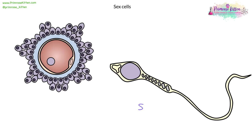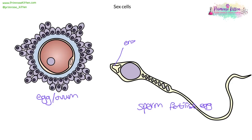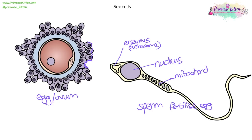The sex cells — the sperm and the egg, or ovum — have particular adaptations to fulfill their function. The function of the sperm is to fertilize the egg. To do this, the sperm has enzymes at the front called the acrosome to dissolve away the cell layer surrounding the ovum and get itself into the egg so the nuclei can fuse. In the neck area of the sperm, there are many mitochondria to create energy for swimming. It also has a tail — a protein flagella — which helps the sperm swim towards the egg.